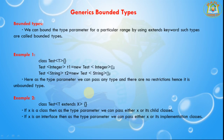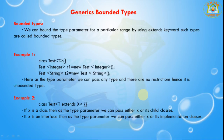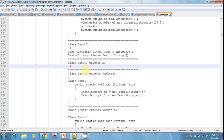Now going to the second example: I am creating a class test where T extends X. If X is a class, then as the type parameter we can pass either X or its child classes. If X is an interface, then as the type parameter we can pass either X or its implementation classes.